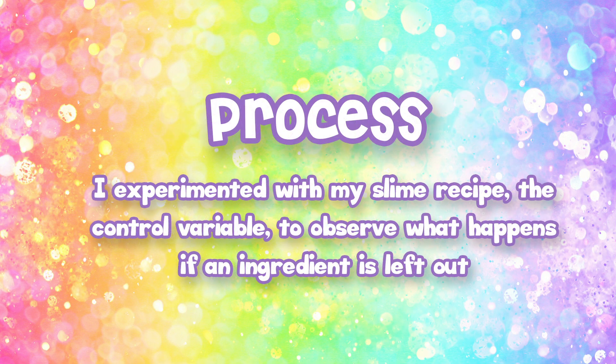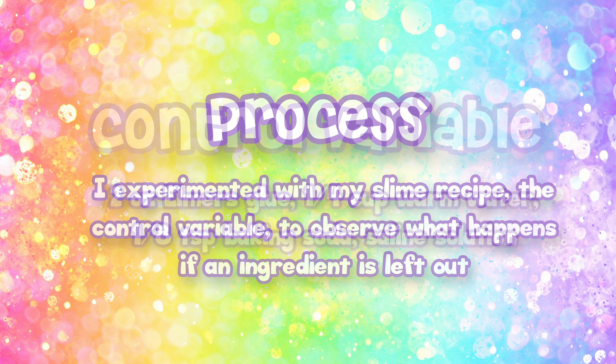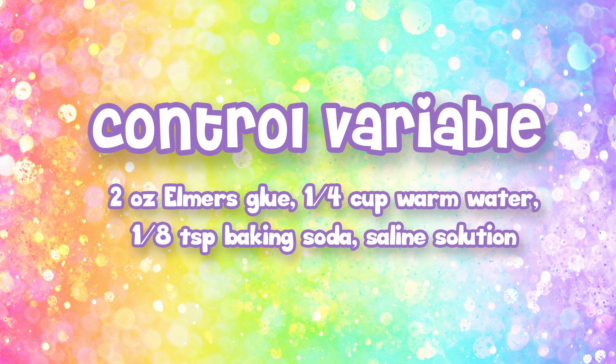For this experiment we are going to take our control variable and take out each of the ingredients and see what happens. Our control variable is our perfect slime recipe which we know makes slime for sure. What we need is warm water, baking soda, some glue, and saline solution.